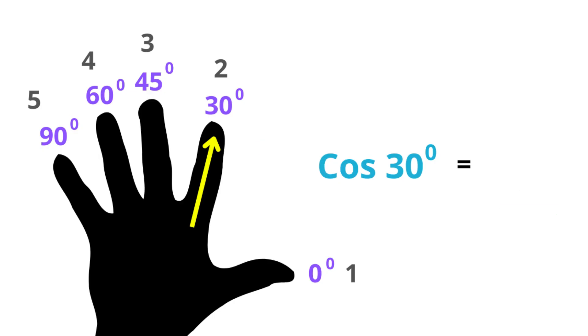Now let's find cosine of 30 degrees. When we find the cosines we count the fingers to the left from here which is 3 in this case. Then we take the square root of 3 and divide it by 2. This is the answer. See it's a pretty simple trick.